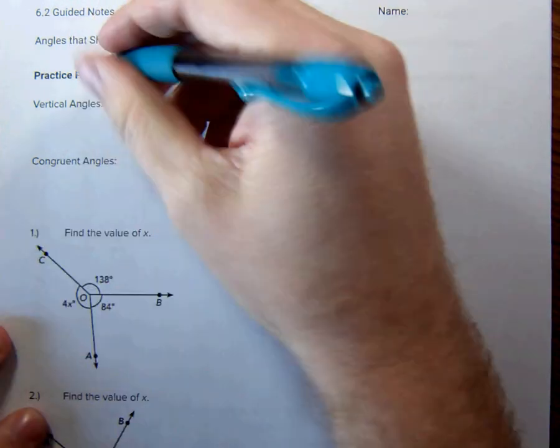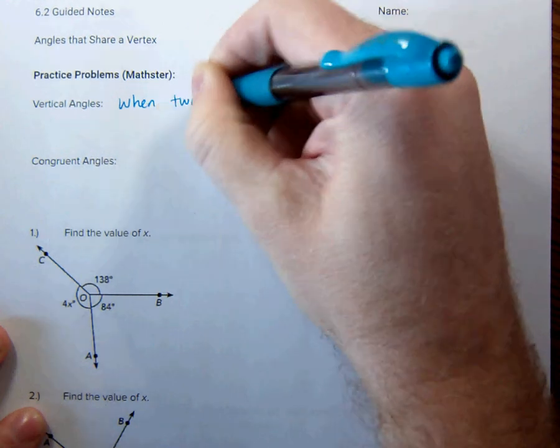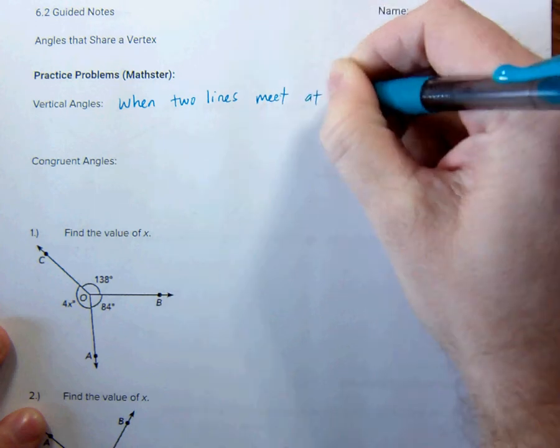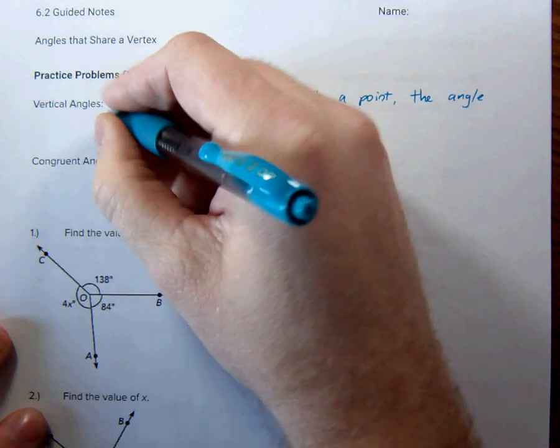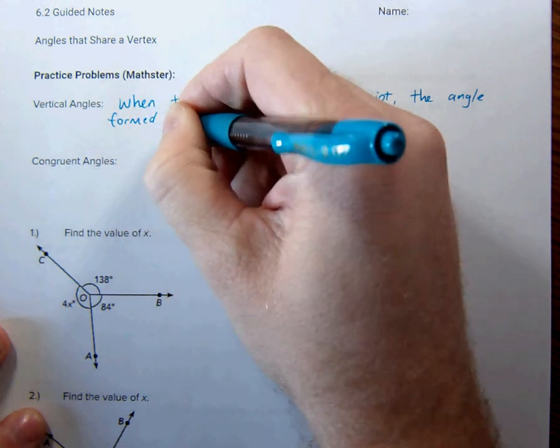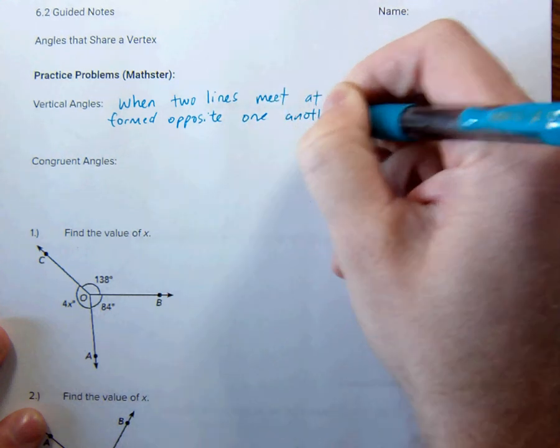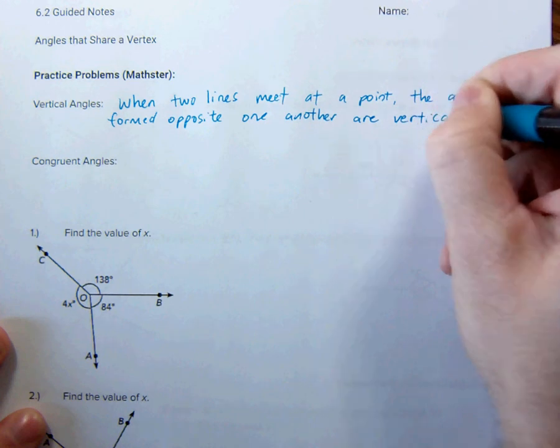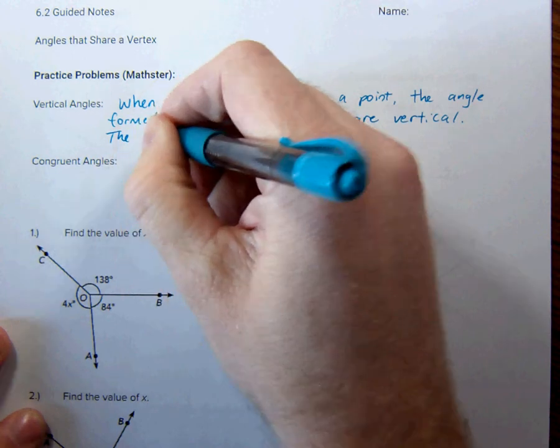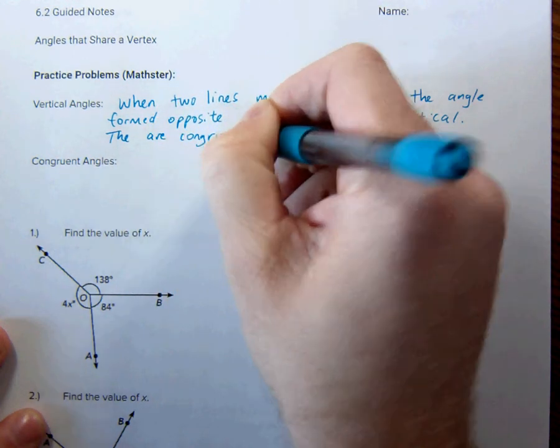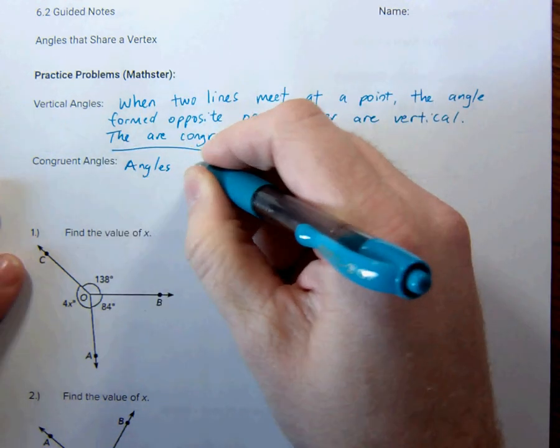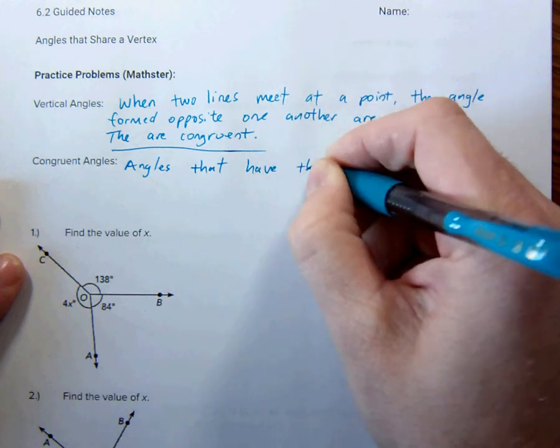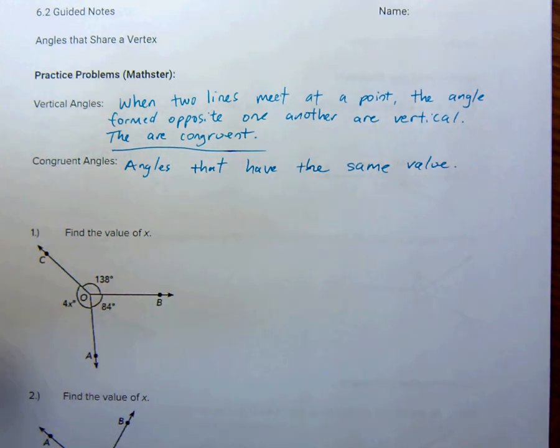Vertical angles are created when two lines meet. When two lines meet at a point, the angles formed opposite one another are vertical. They are also congruent, which I believe we know. But just to make sure you do, congruent angles are angles that have the same value. They're angles that are equal to each other. So angles that are equal to one another are congruent.